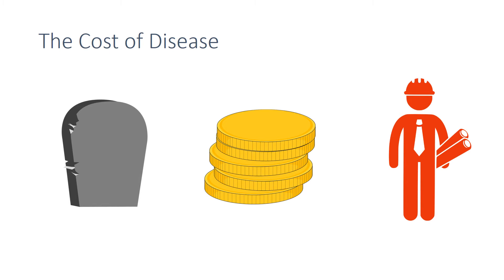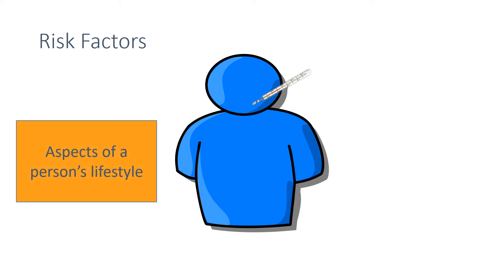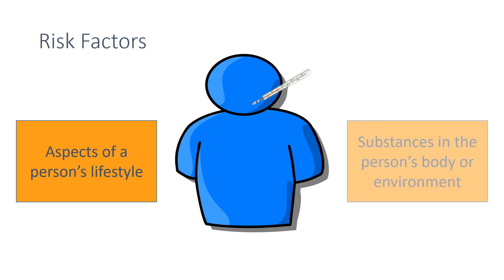Risk factors are linked to an increased rate of a disease, and they can be put into two main groups: the aspects of a person's lifestyle, or due to substances in the person's body or environment.